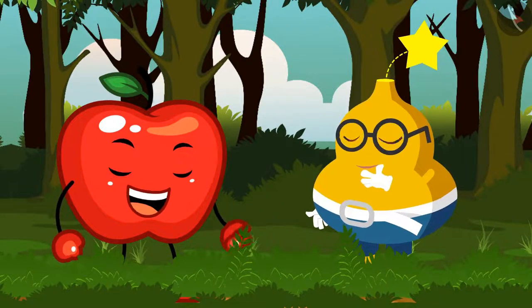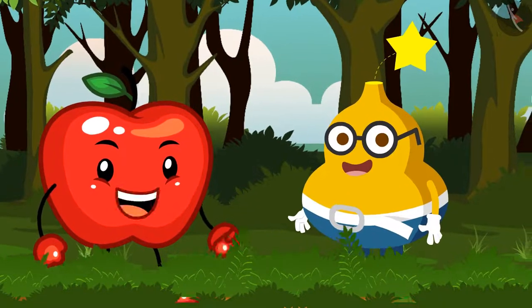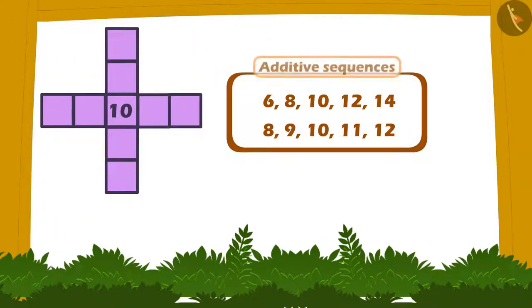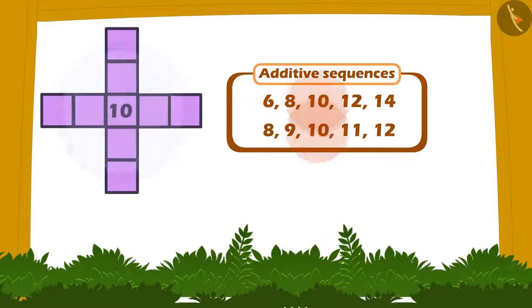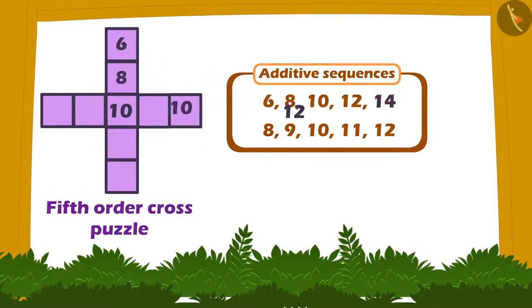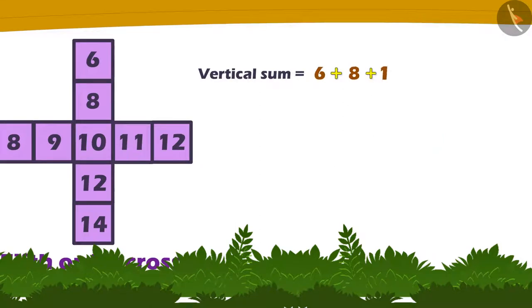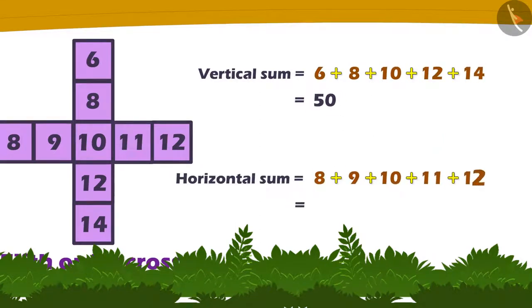Let me share one more way to solve this puzzle. See these are the two five term additive sequences with 10 as a common middle term. I can use these sequences to fill the cells of the fifth order cross puzzle like this. Now let's check its vertical and horizontal sum. It is 50.